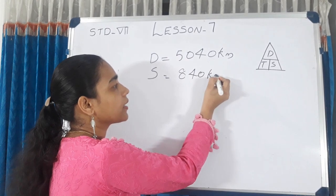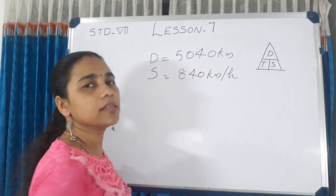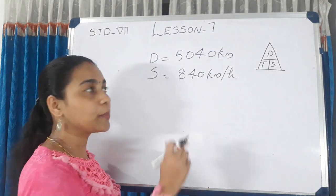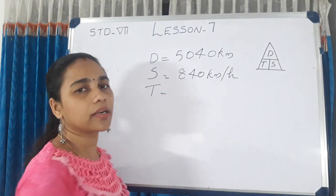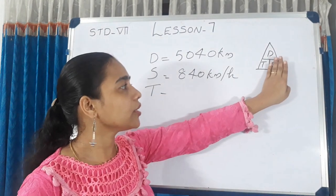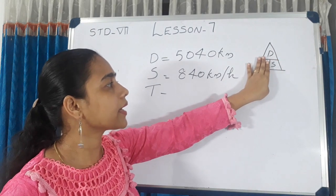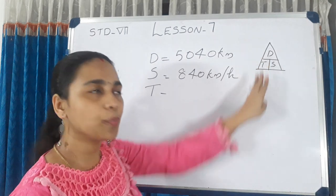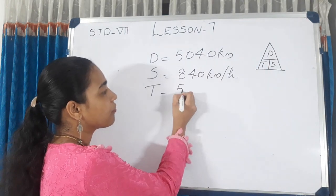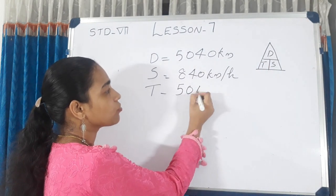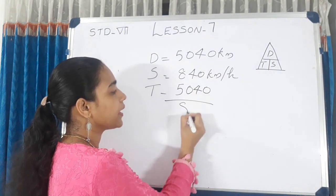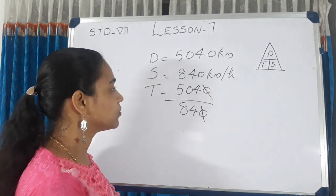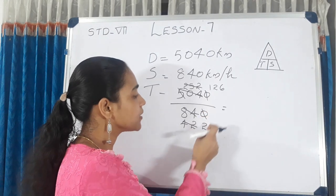The average speed depends on time. The average speed is 100. Now 5,040 divided by 8 gives us 100 remainder 40. That means 126 is 21.